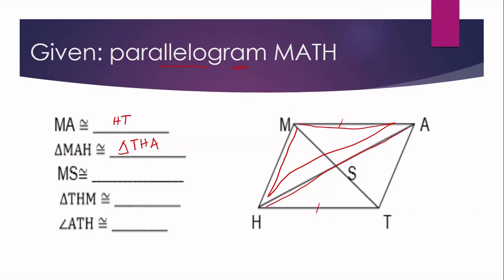Number three: MS is congruent to ST. This is because the diagonals bisect each other — diagonal AH divides MT into two equal segments MS and ST, since MATH is a parallelogram and AH bisects MT.